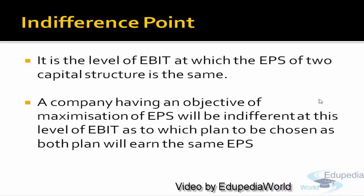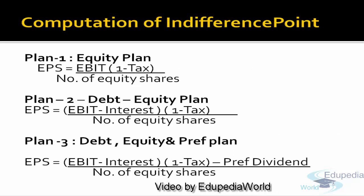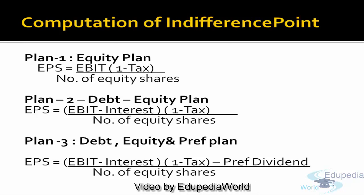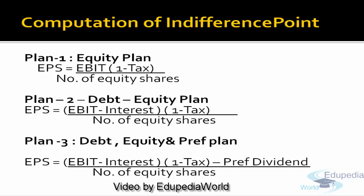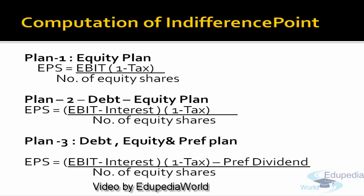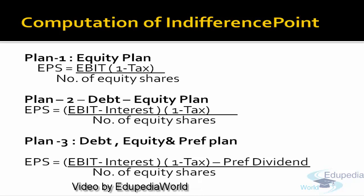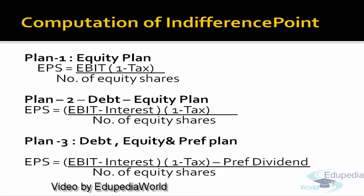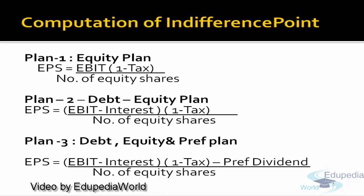So if a company only has equity, how will you compute the earning per share? You take the earnings before interest and tax, reduce the tax portion — that is the earning available to equity shareholders — and divide it by the number of equity shares. This gives the earning per share. If the company also has debt, to compute EPS, we will also reduce the interest portion from EBIT, then reduce tax, and divide it by the number of equity shares.